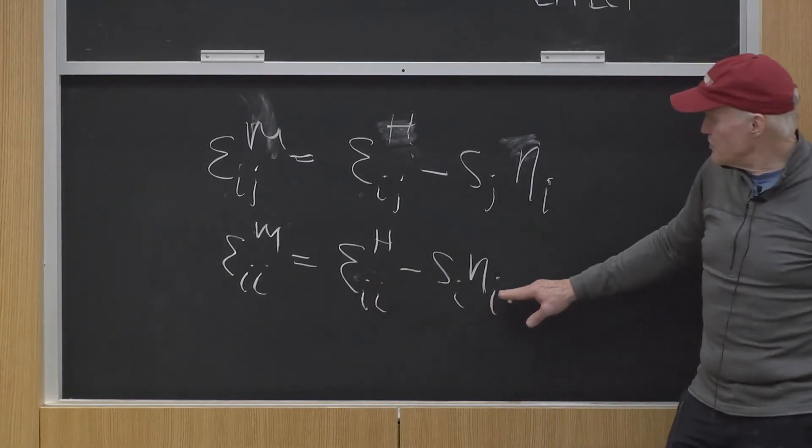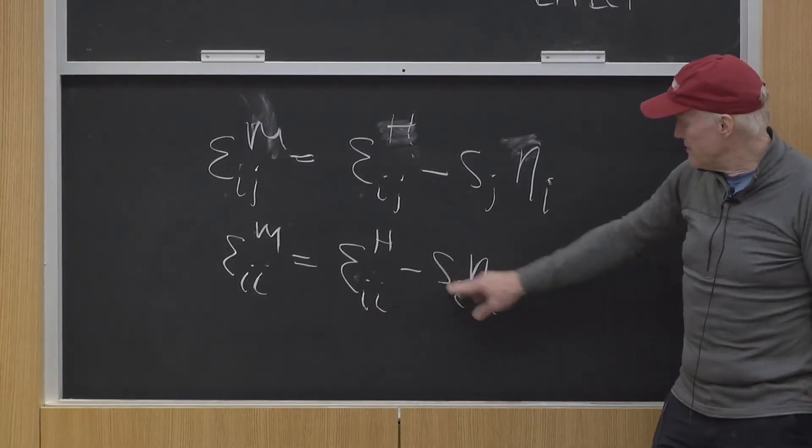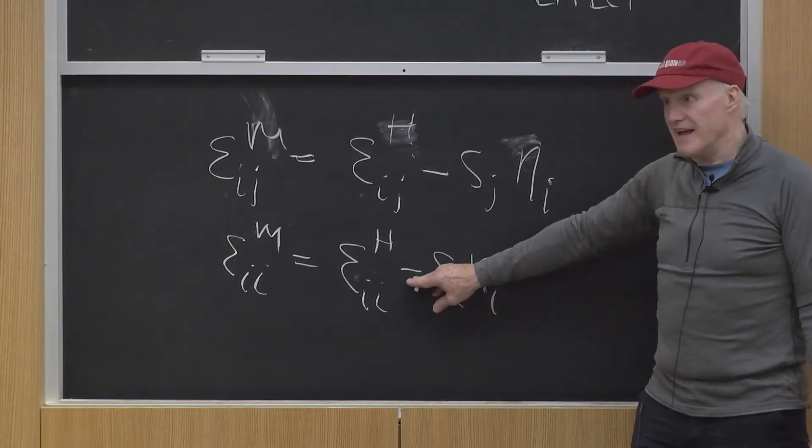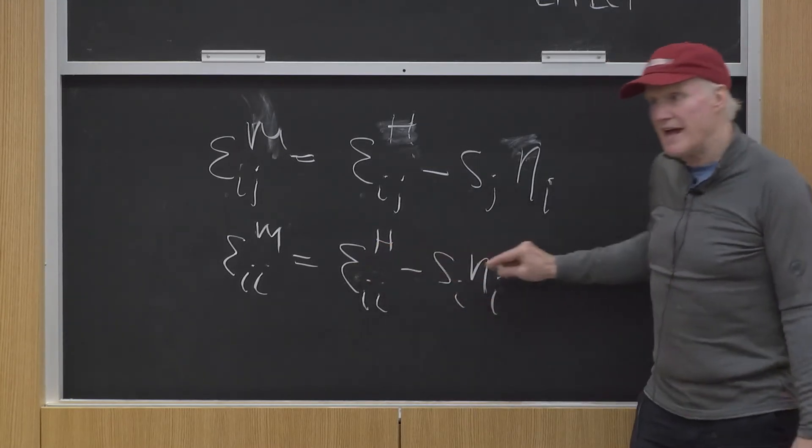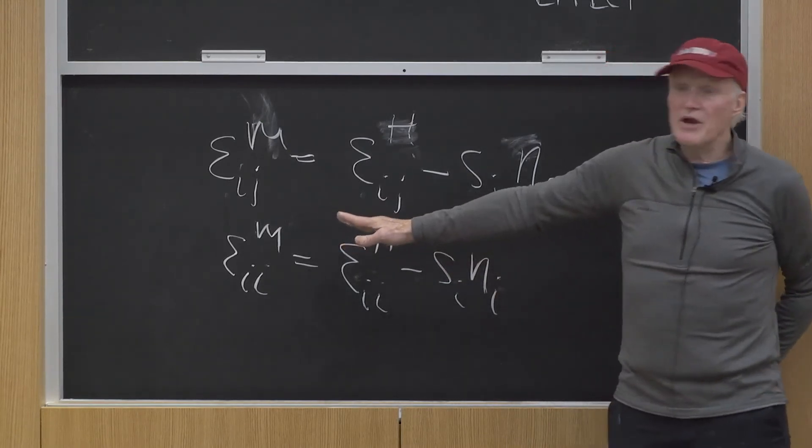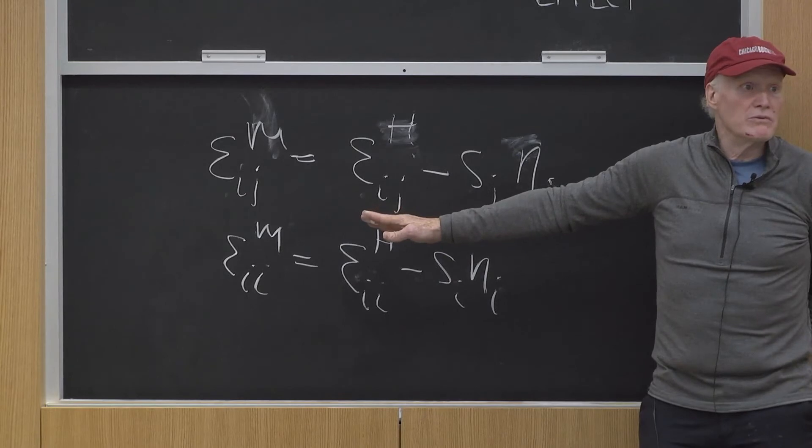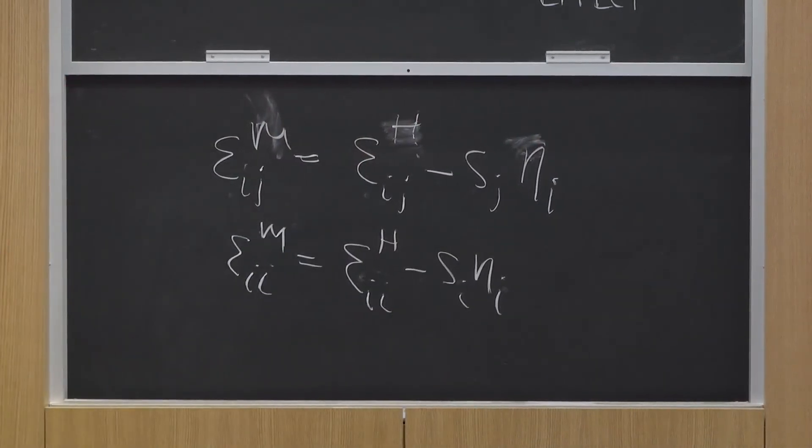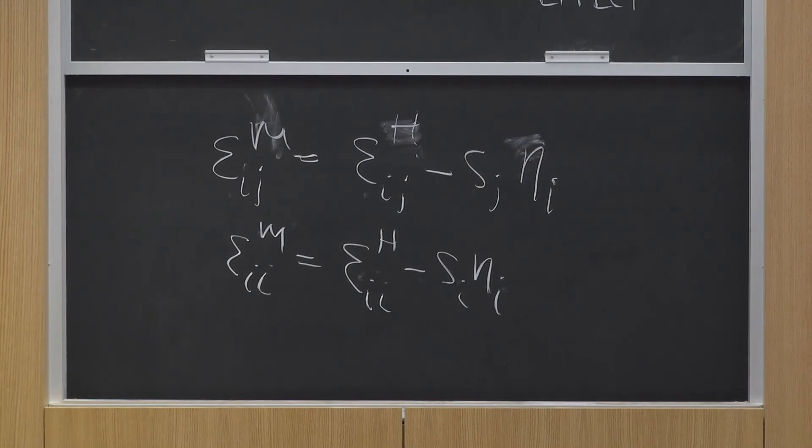Now, if the good is normal, then this term is positive, this term is positive, and the negative sign is negative. So this whole thing has to be negative. So for a normal good, immediately we know the law of demand is going to hold. That is, the Hicksian demand curve is downward sloping, and the Marshallian demand curve is even more responsive because there's an extra term there. The income effect reinforces the substitution effect.